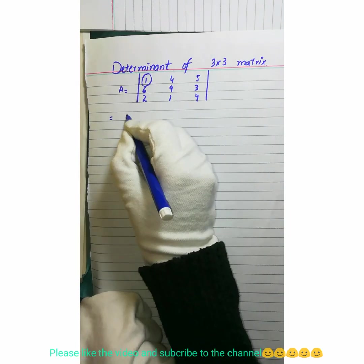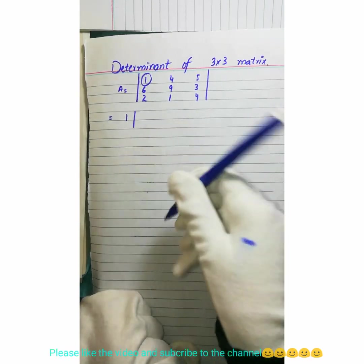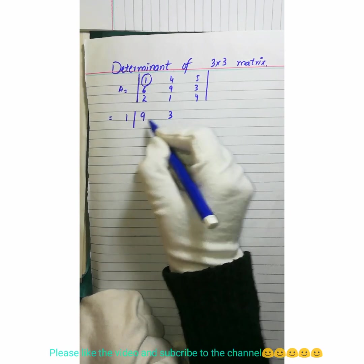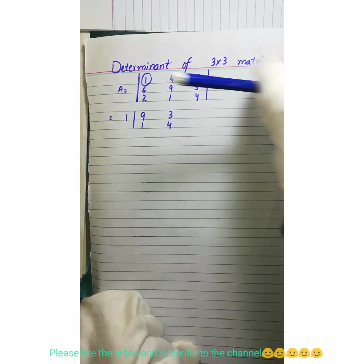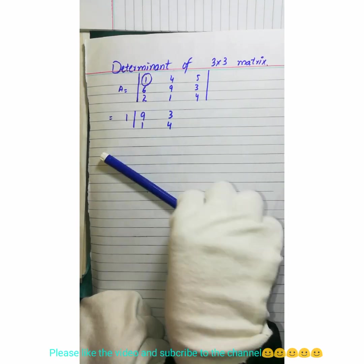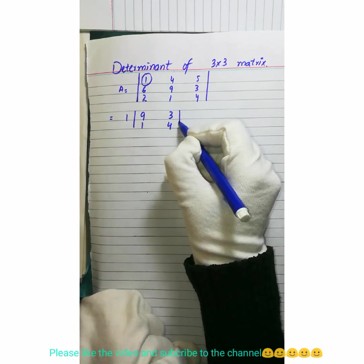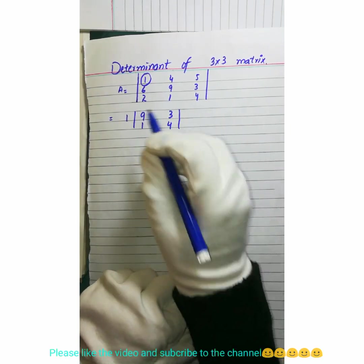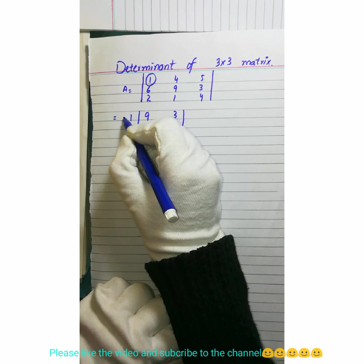These are the rest of elements: 9, 3, 1, 4 by ignoring this row and this column. We will cross this as a matrix. The sequence of the signs is plus.